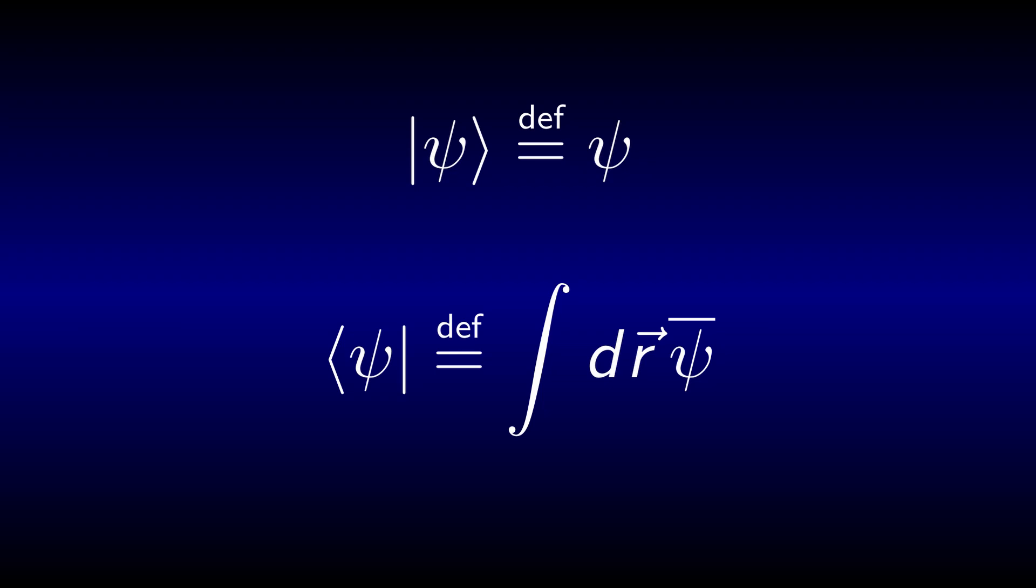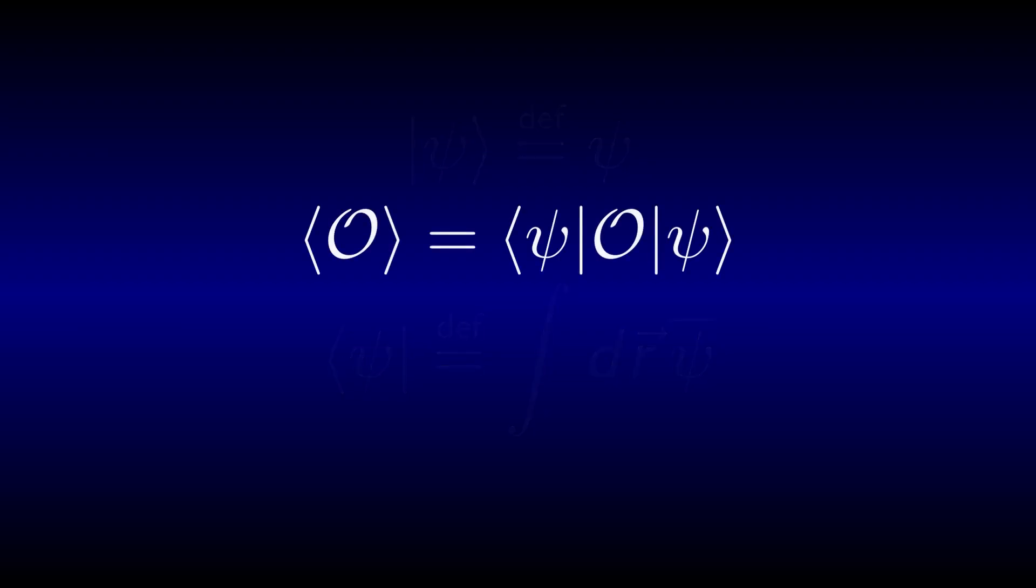Together, they make up a bracket, hence the names, but I'm well aware that it sounds as if I'm talking about felines and underwear. In Dirac notation, the expectation value can be neatly written as bra-psi-O-ket-psi.